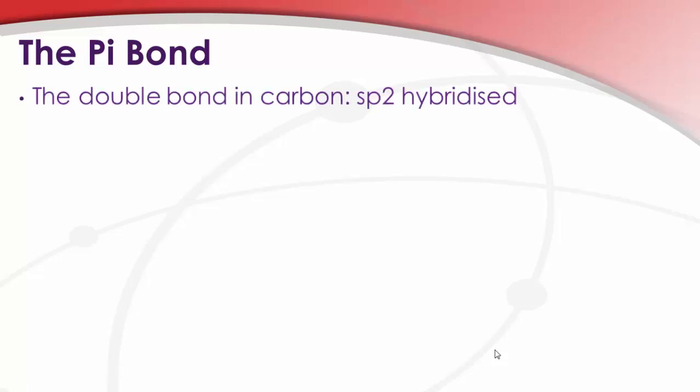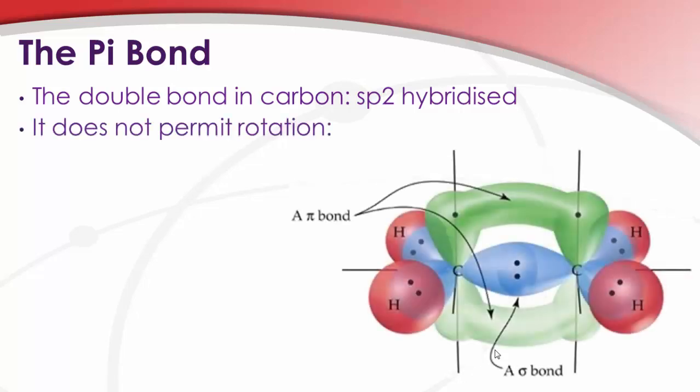In contrast, our pi bond is something very different. So when we have a double bond in carbon, it's SP2 hybridized, and it doesn't permit rotation. So this is ethene, showing our sigma bonds in blue. So we still have this overlap of electrons here, overlap of the orbitals for our sigma bond, between the two carbons. On the other hand, the pi bond is above and below the plane of the molecule.